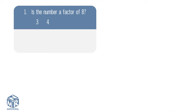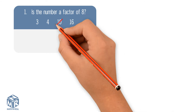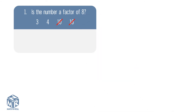Let's try some questions. We know that factors are less than or equal to 8, so we can cross out 10 and 16 because they're greater than 8. Let's check if 3 is a factor of 8. Divide 8 by 3 — we get 2 with a remainder of 2, so 3 is not a factor. Let's try 4 by dividing 8 by 4. We get 2 with no remainder, so 4 is a factor of 8.